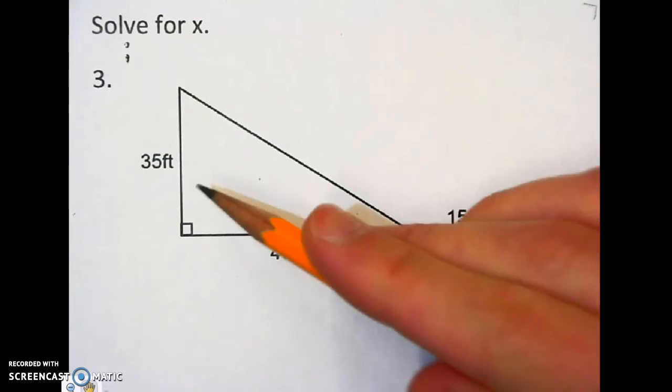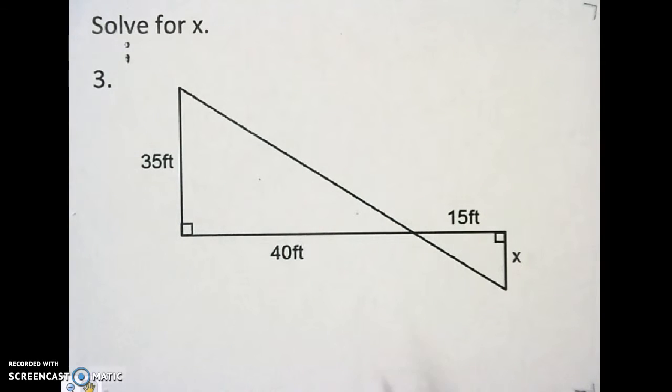I'm going to set up a proportion on this because I know that these triangles are similar, and here's how I know. I've got a 90-degree angle in common. I need one other angle that's the exact same.